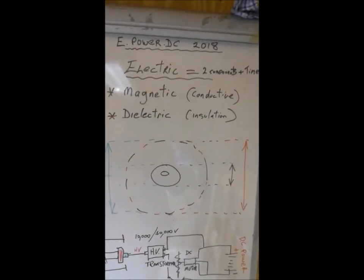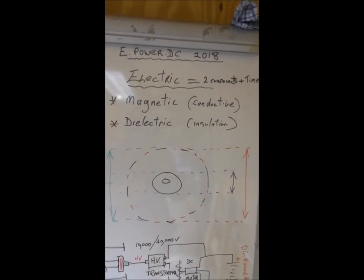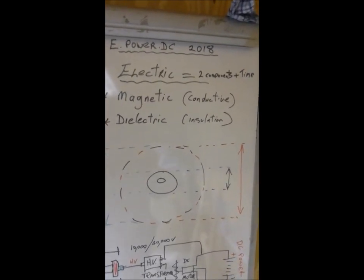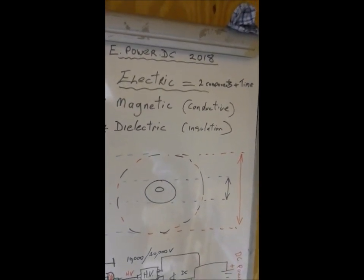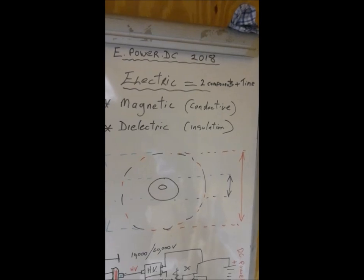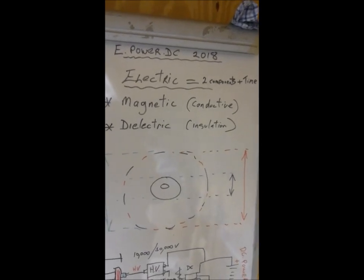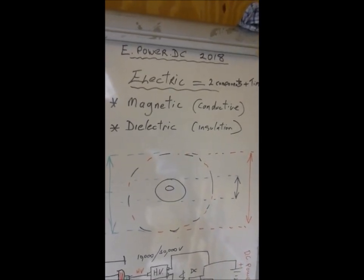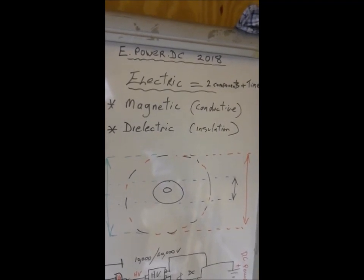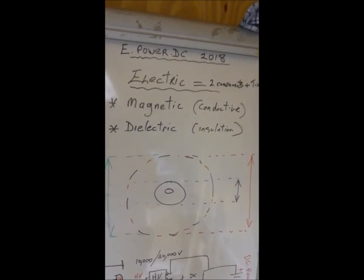Hi everybody, this is DC here. I'm sorry I've been away for a while. I've been studying electrics and I've come to the conclusion that electric is both magnetic and dielectric, two components together that cannot be separated.